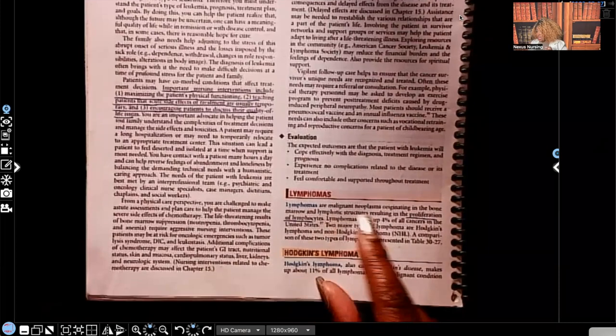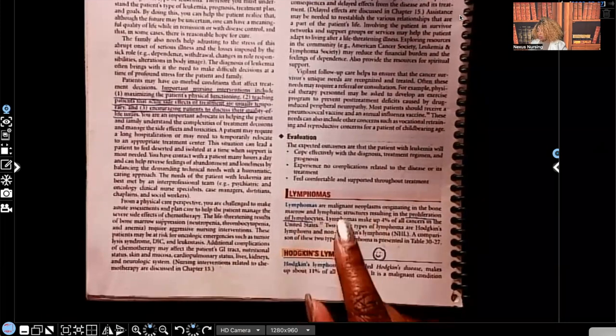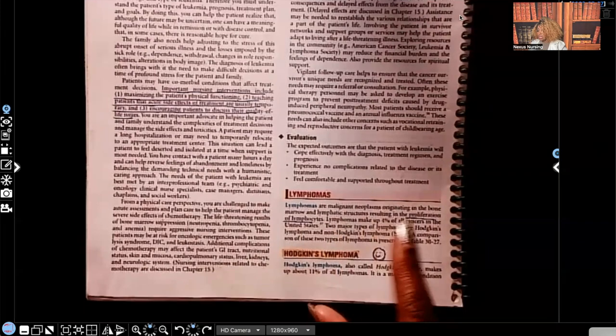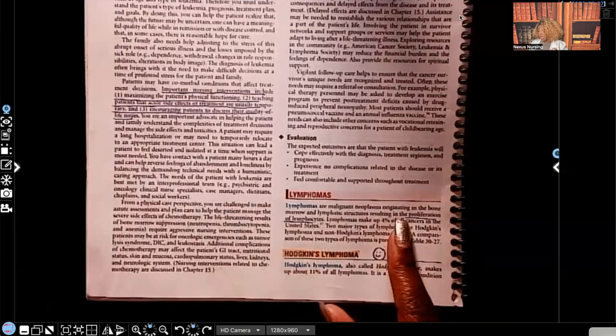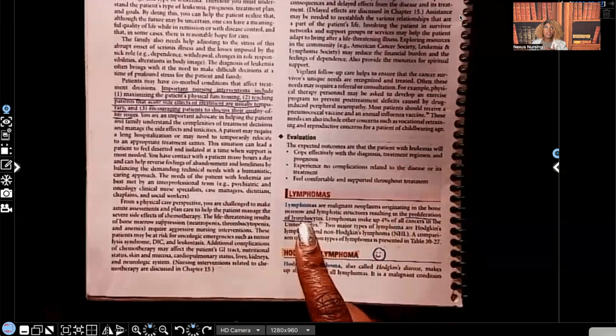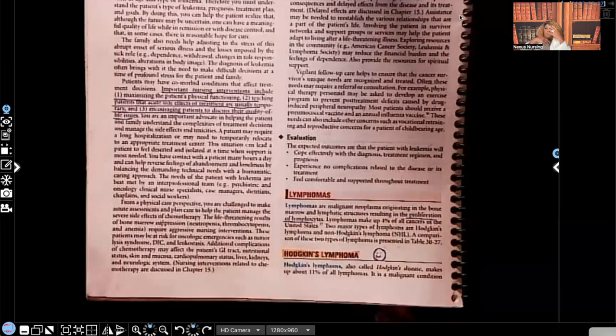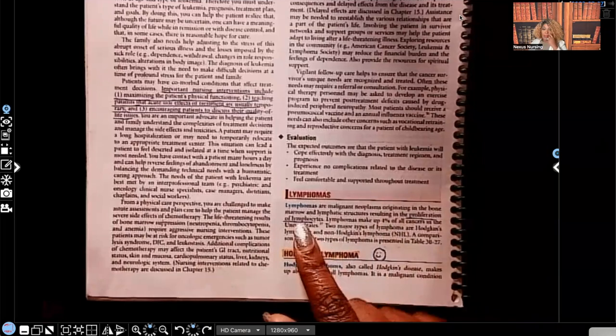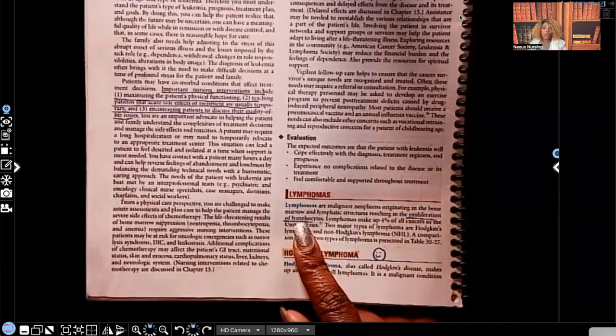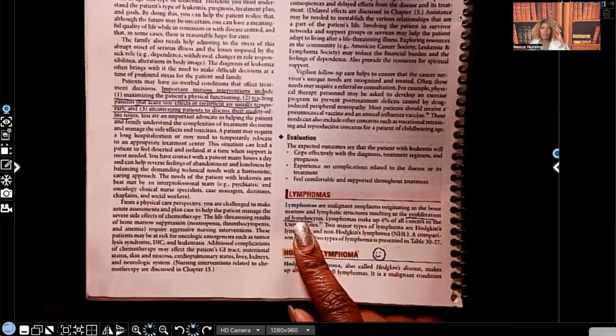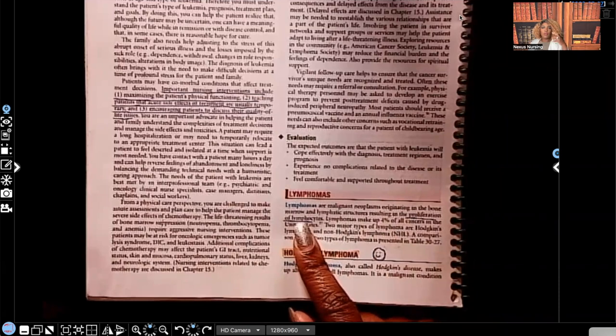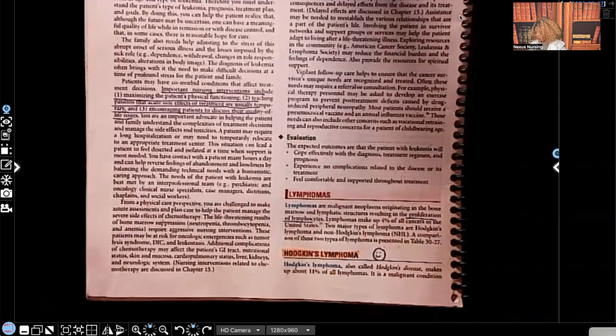It's a malignant neoplasma originating in the bone marrow and lymphatic structures, resulting in proliferation of lymphocytes. What does proliferation mean? That means something that builds up very rapidly. So increasing rapidly of lymphocytes. What are lymphocytes? Lymphocytes are type of WBC. So you have all of these WBCs that are being produced very rapidly. So let's keep going.